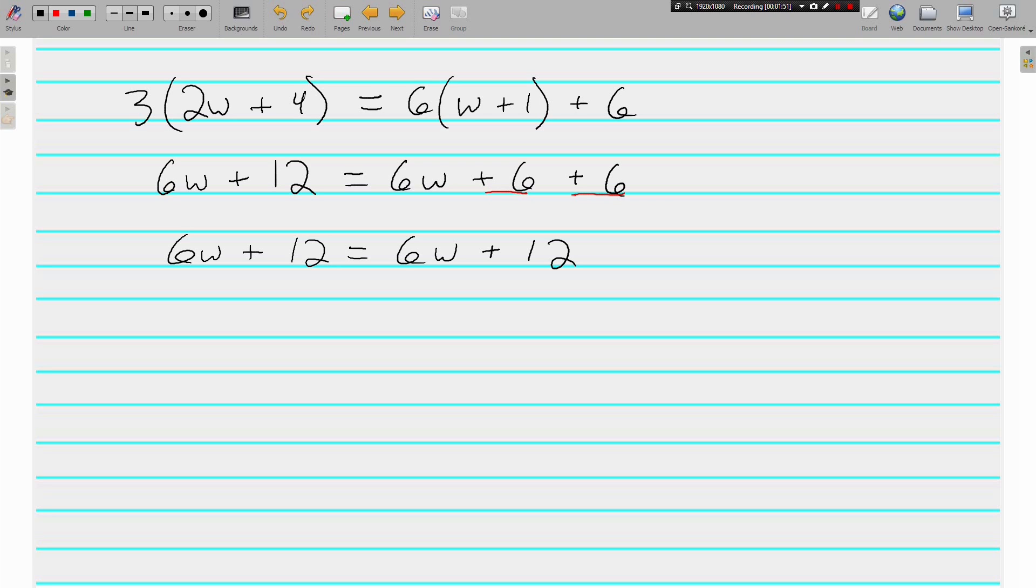We're pretty much done here, but we are going to go ahead and get our variables together first. I'm going to take away 6w. What I do to one side, I have to do to the other side. So if I do 6w minus 6w on both sides, all of my w's are gone. What I'm left with is 12 on the left and 12 on the right.